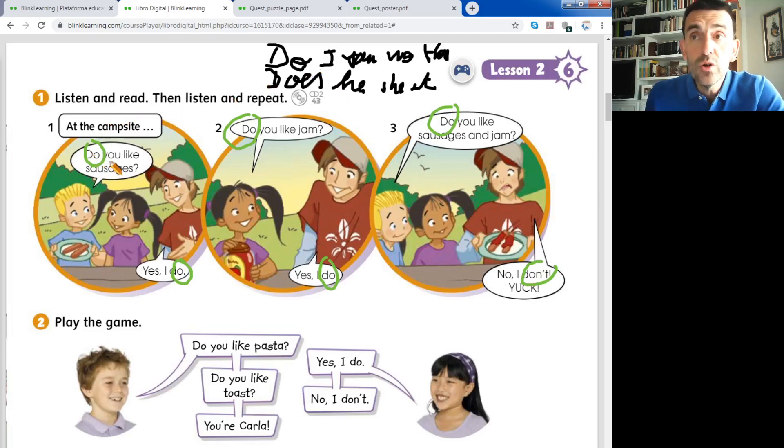In this case, se pone con el do. Y siempre que te preguntan con do, the answer has a do. Do, do, or don't. And if the answer is negative, don't. Si es negativa, don't. De acuerdo? Entonces, si alguien te pregunta do you like sausages, yes I do. Pero si te preguntaran, does she like potatoes? La respuesta sería yes she does. Como viene con does la pregunta, la respuesta tiene que ser does. No se puede poner do o don't. Vale? Yes she does, o no she doesn't.